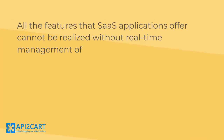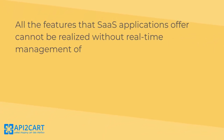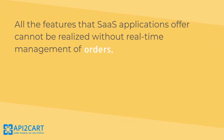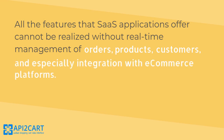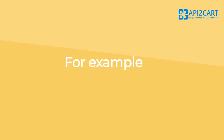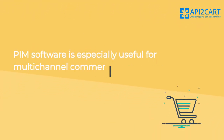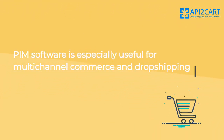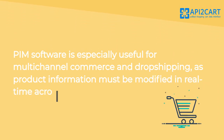All the features that SaaS applications offer cannot be realized without real-time management of orders, products, customers, and especially integration with e-commerce platforms. For example, PIM software is especially useful for multi-channel commerce and drop shipping, as product information must be modified in real-time across many shopping channels.